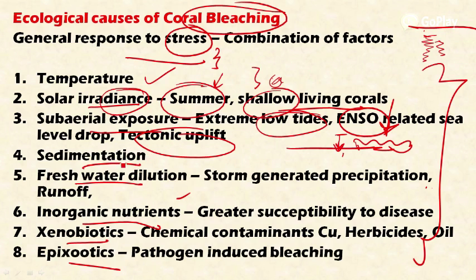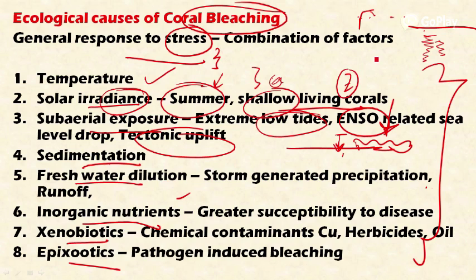The fourth important factor is sedimentation. Coral reefs require clean, clear, and saline water. Sedimentation reduces water clarity and increases turbidity, which results in the destruction of zooxanthellae because they need sunlight for photosynthesis. If the water is too turbid, the zooxanthellae lose the capacity to produce photosynthetic products.